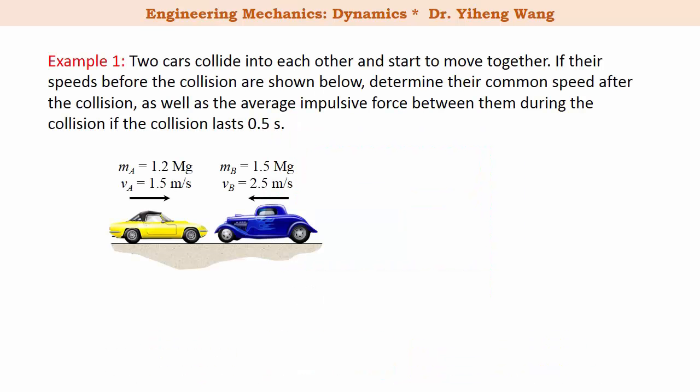Let's look at this example. Two cars were initially driving towards each other with the speeds shown. If they collide and stick together and then move together, we need to determine their common speed after the collision, and also determine the average impulsive force between them during the collision if the collision lasts 0.5 seconds.